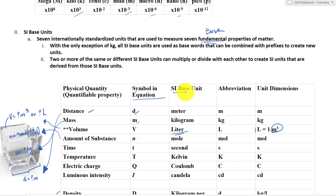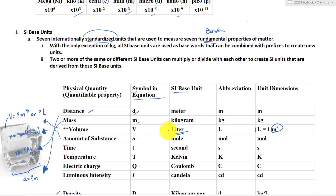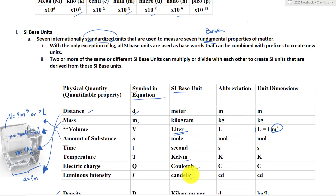The base units are standardized units used to measure different properties of matter. For distance we have meter; for mass, kilograms; for volume, liter — though this is an exception, as it used to be an SI base unit but is commonly used. For amount of substance we have mole; time is second; temperature is Kelvin; charge is Coulomb; and luminous intensity is candela. Abbreviations are provided for all these units.